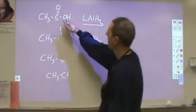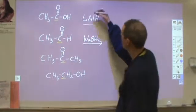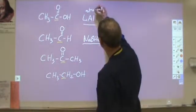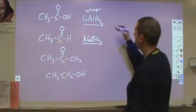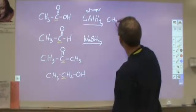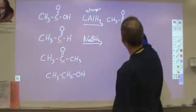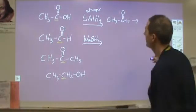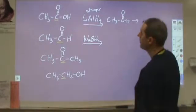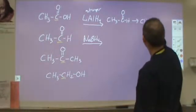In the case of a carboxylic acid, you would want to use this one—this one is the stronger reducing agent. For a carboxylic acid that's going to become an aldehyde, and then if there's sufficient amount of reducing agent, that's going to go all the way down to a primary alcohol.